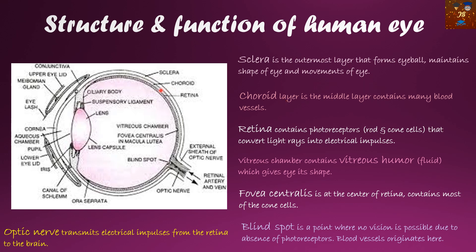Next comes the choroid layer. It is the middle layer and contains many blood vessels. Next comes the retina, which is the most important one. It contains the photoreceptors — receptors known as rods and cones — which receive light from the environment and convert light rays into electrical impulses.